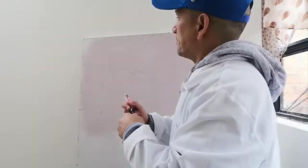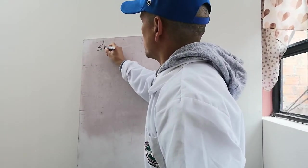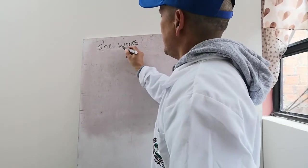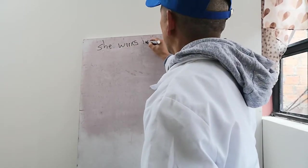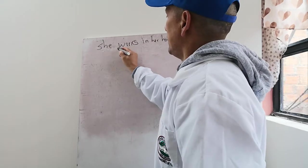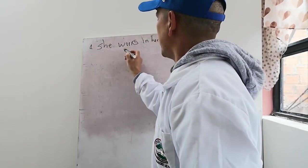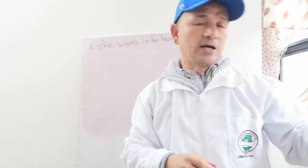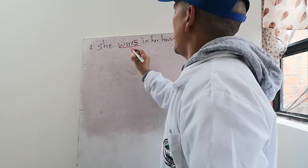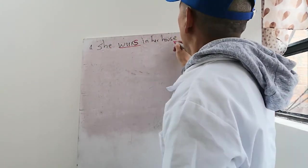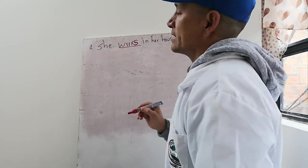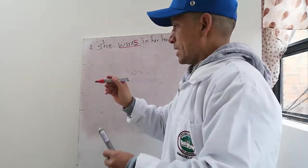Hablando de terceras personas hay tres reglas. Cuando hacemos una afirmación tenemos que colocarle la S. She works in her house. Lo más interesante de la primera regla es entender que debo colocar la S al verbo. Esto lo utilizamos básicamente para las oraciones afirmativas o positivas.